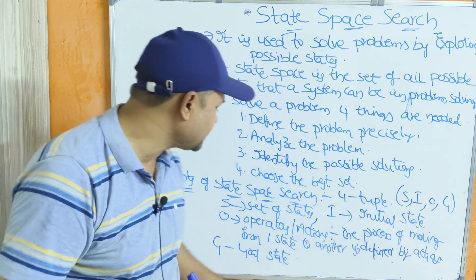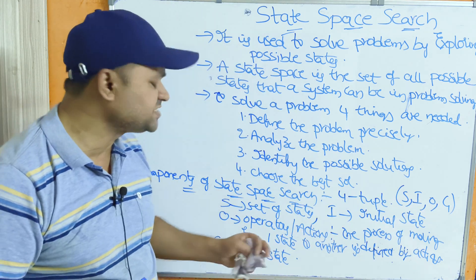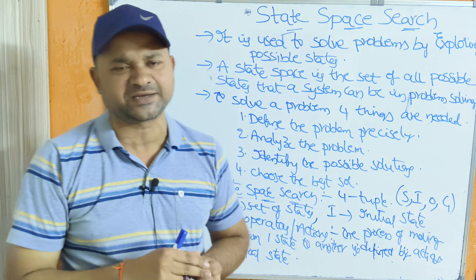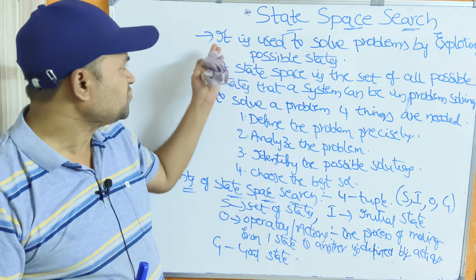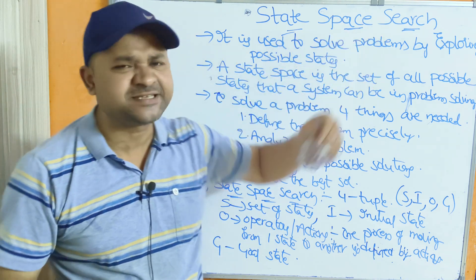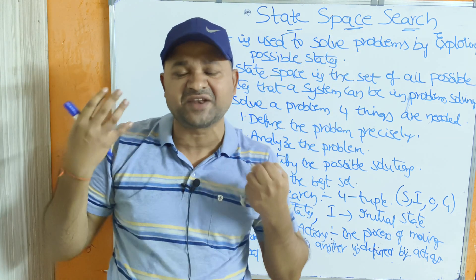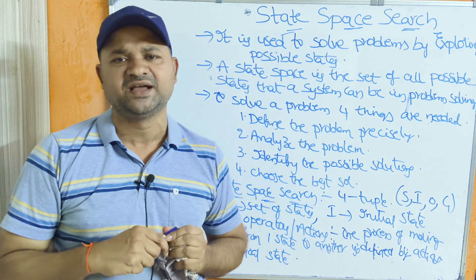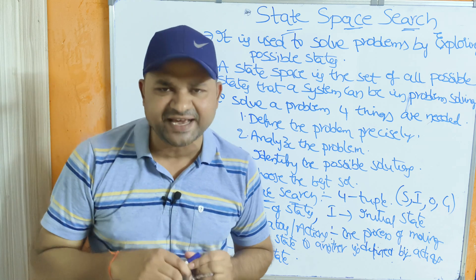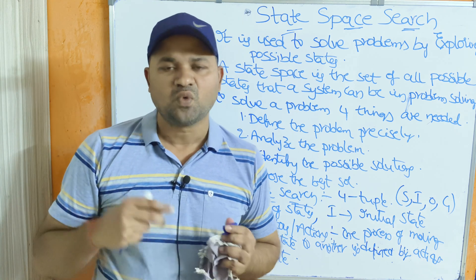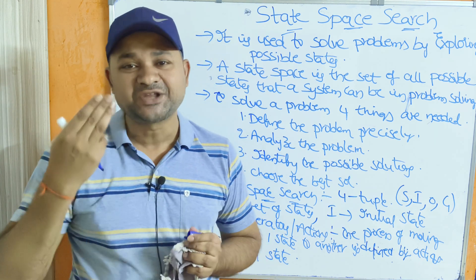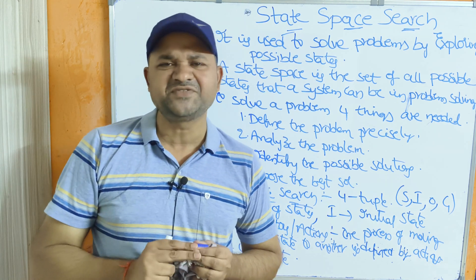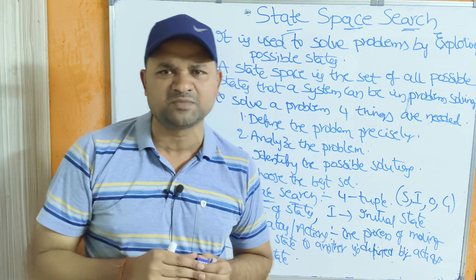The last component, J, is the goal state — the final state. For state space search, we have several examples in artificial intelligence, such as chess, the water jug problem, and the tic-tac-toe problem, among various others.